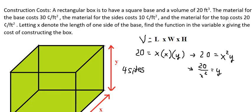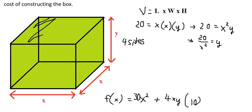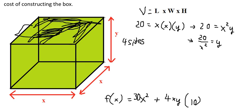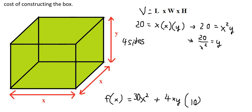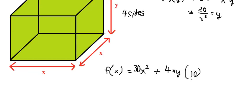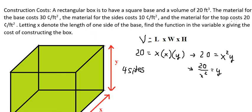And the last one is the top. The top is this one here. Because the area of the base is the same as the top, that is s squared, and the price is 20.